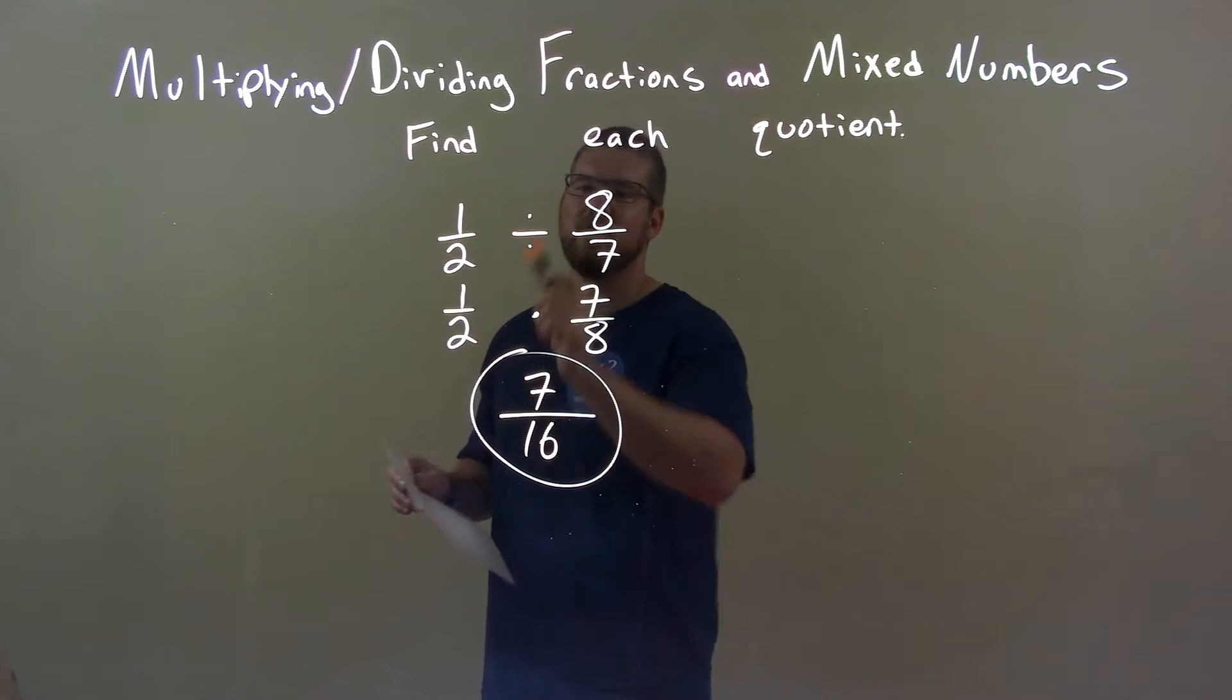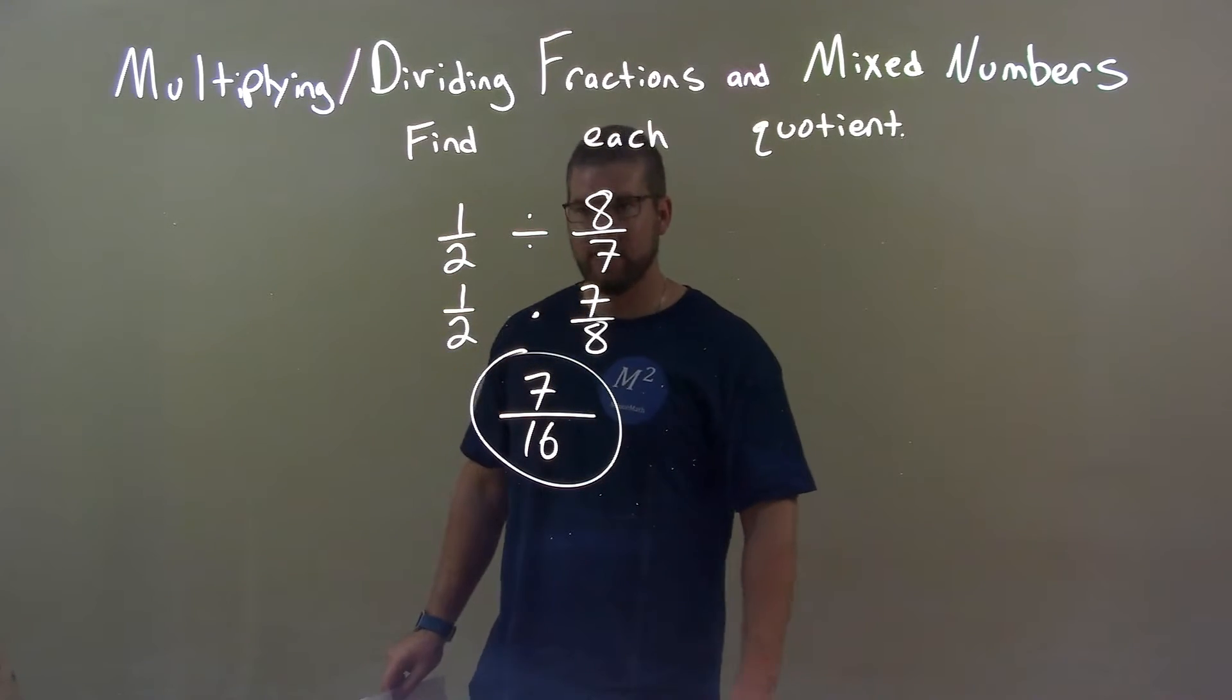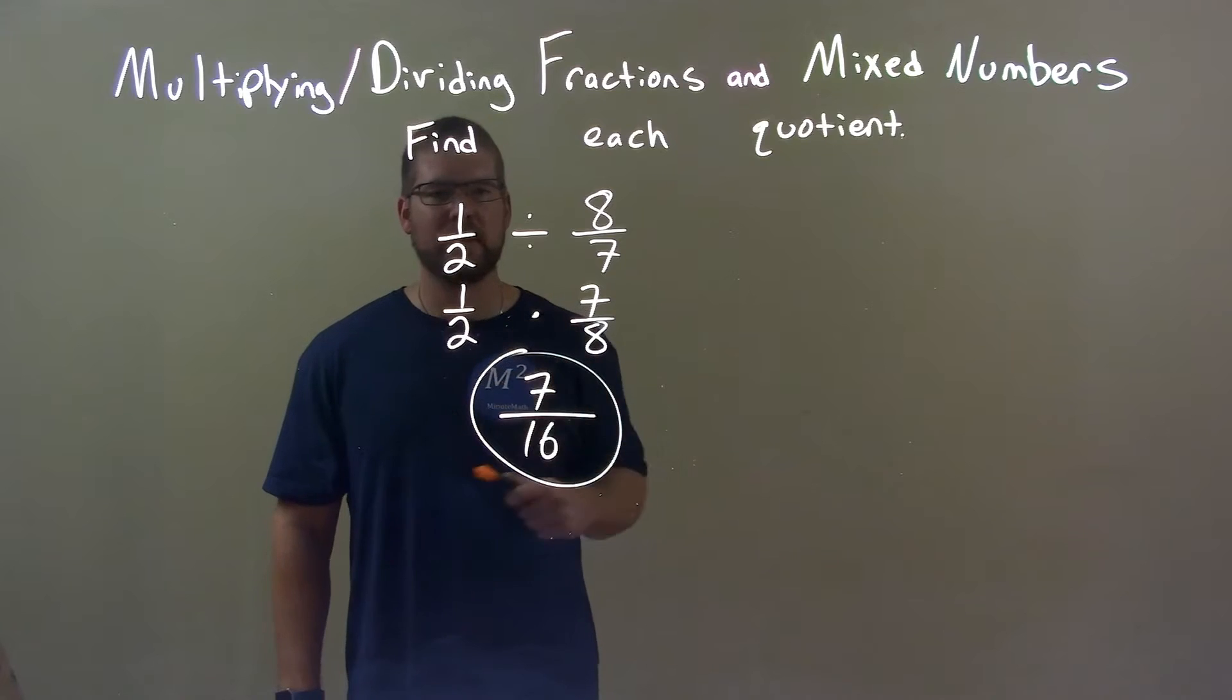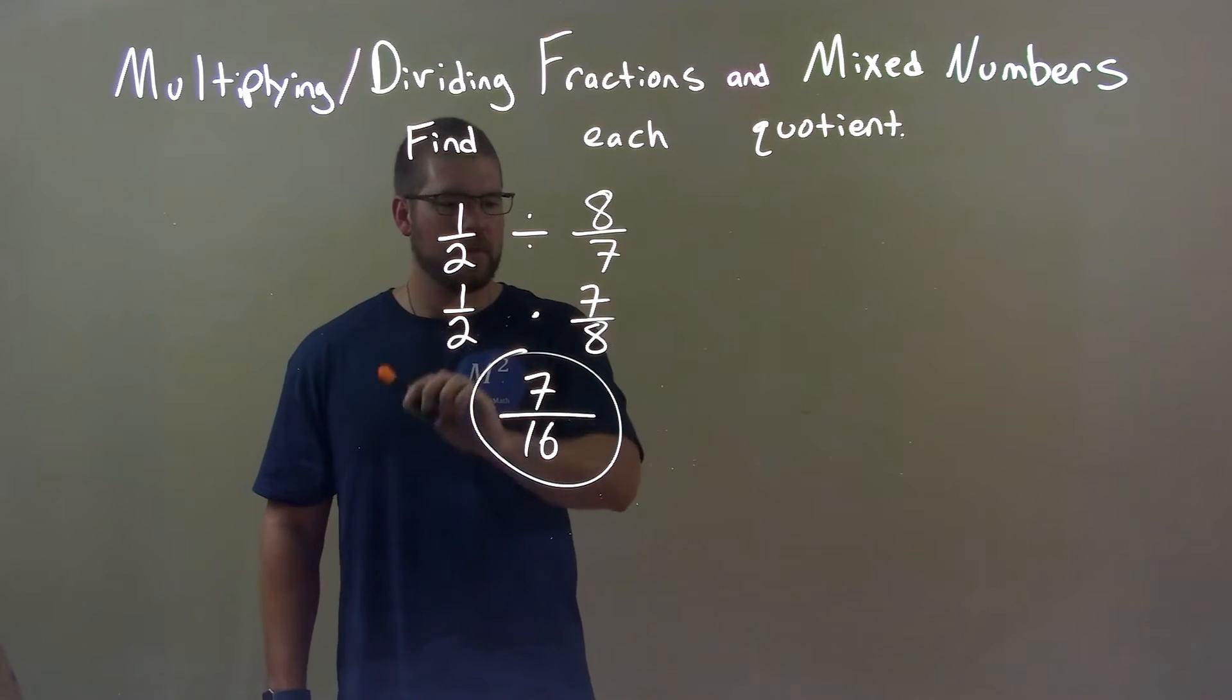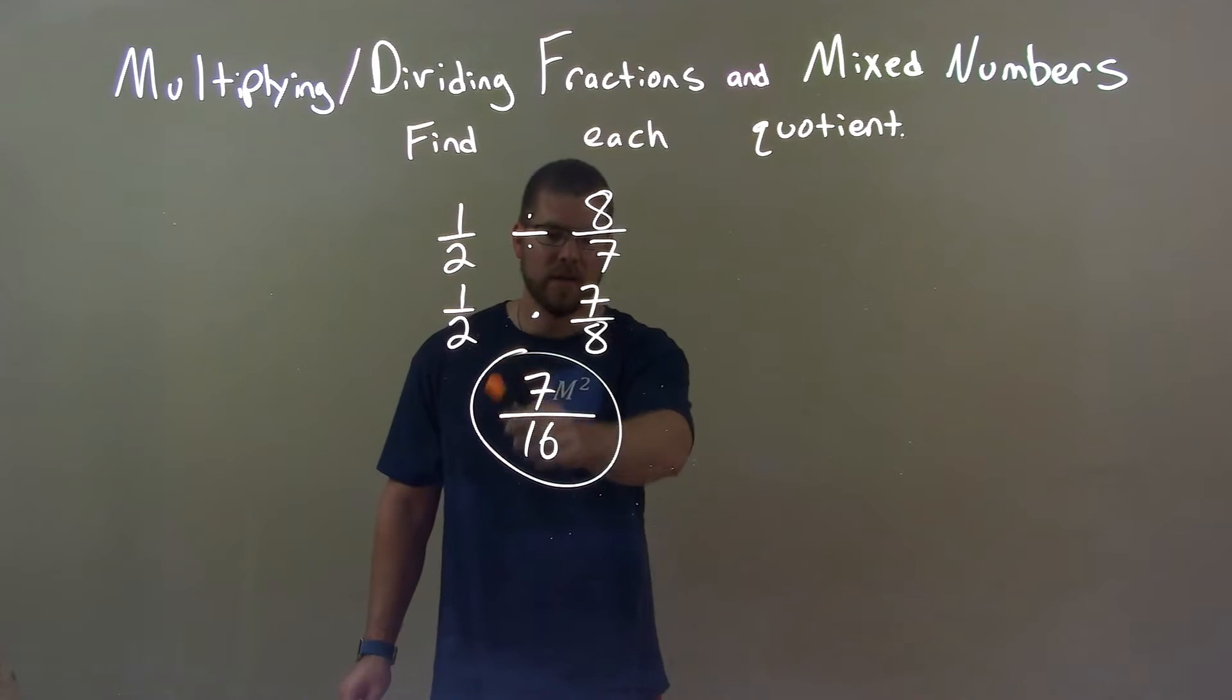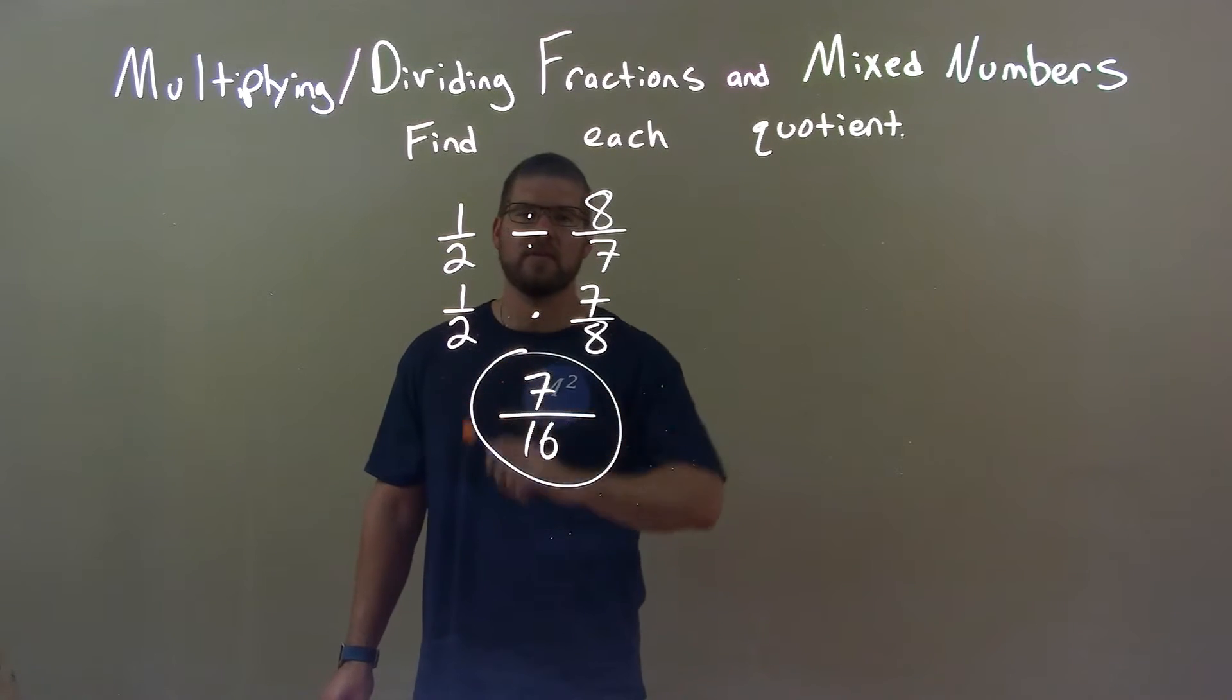Quick recap. We're given one-half divided by eight over seven. I don't like division, convert that to multiplication, seven over eight. Then multiply across the numerator, multiply across the denominator, and got our final answer, seven over sixteen.